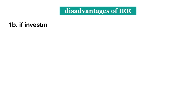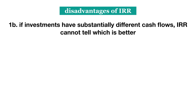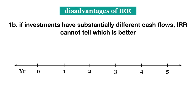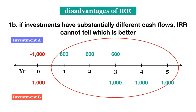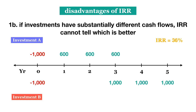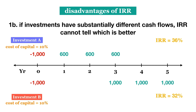Taking this idea further, we discover that if our investments have substantially different cash flows, our IRR can't always tell us which one is better — it will depend on our actual discount rate or cost of capital. For example, suppose I am deciding between investment A and investment B. Both have the same initial cash outflow but different cash flows throughout the life of the project. When we calculate IRR, we get 36% for investment A and 32% for investment B, so investment A sounds like the better option. But if the firm's cost of capital is 10% and they can only reinvest cash flows at 10%, the NPV of investment A is $492.11 while investment B has an NPV of $1,055.25. Thus, if the discount rate is 10%, we would actually prefer investment B, even though its IRR is lower.